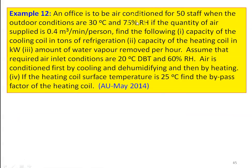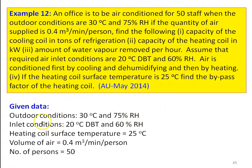An office is to be air conditioned for 50 persons when outdoor conditions are 30°C and 75% relative humidity. The quantity of air supplied is 0.4 m³/min per person. Find: capacity of the cooling coil in tons of refrigeration, capacity of the heating coil in kilowatts, and amount of water vapor removed per hour. Assume required inlet conditions are 20°C dry bulb temperature and 60% relative humidity. The heating coil surface temperature is 25°C.